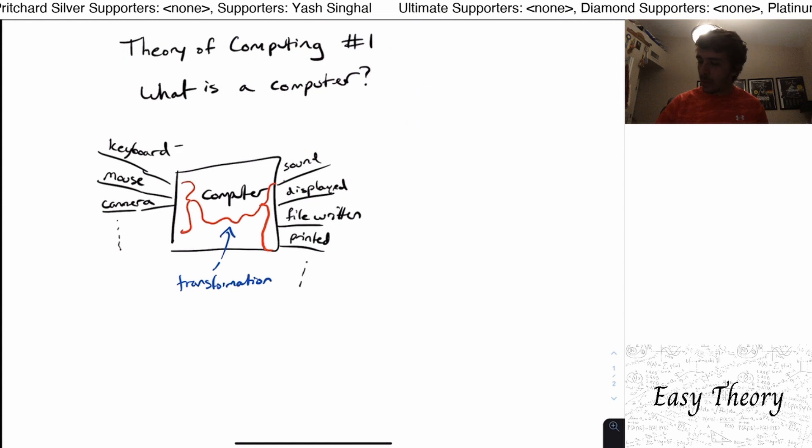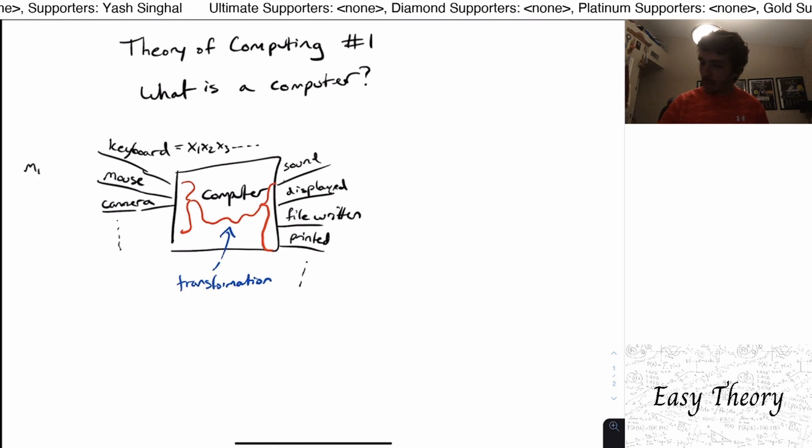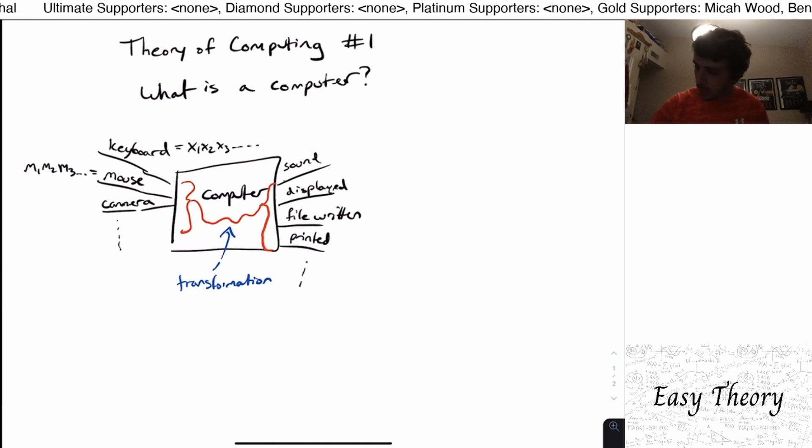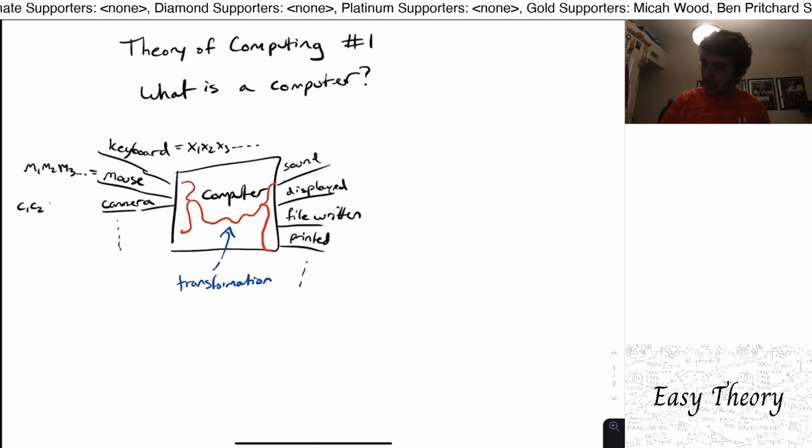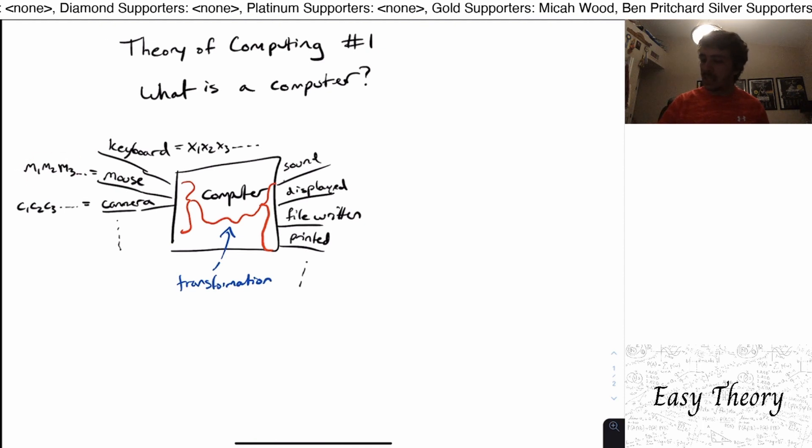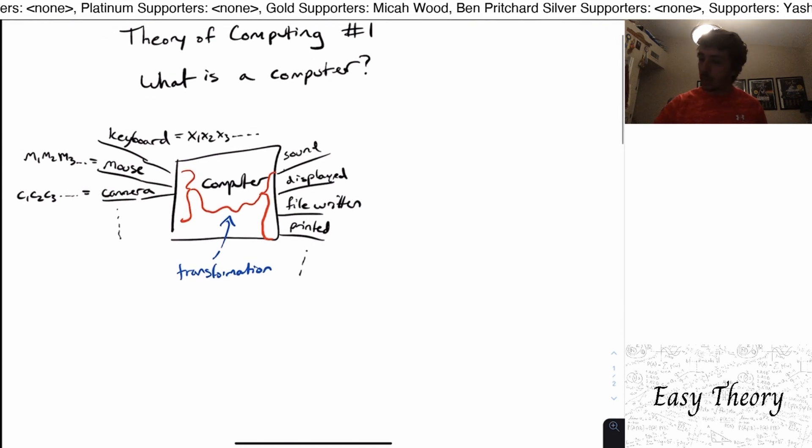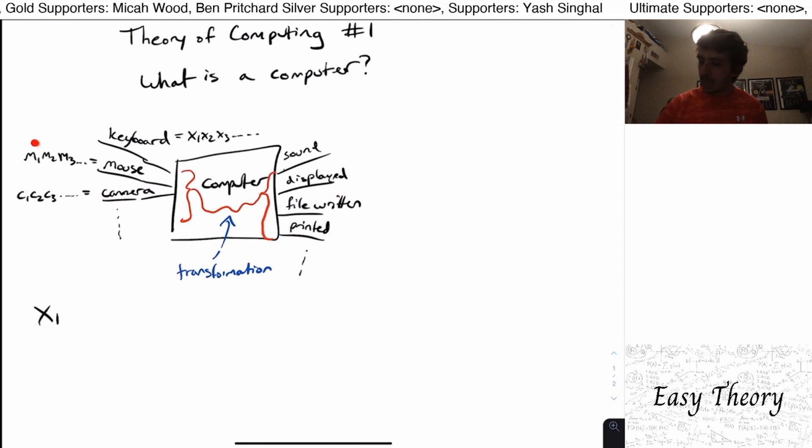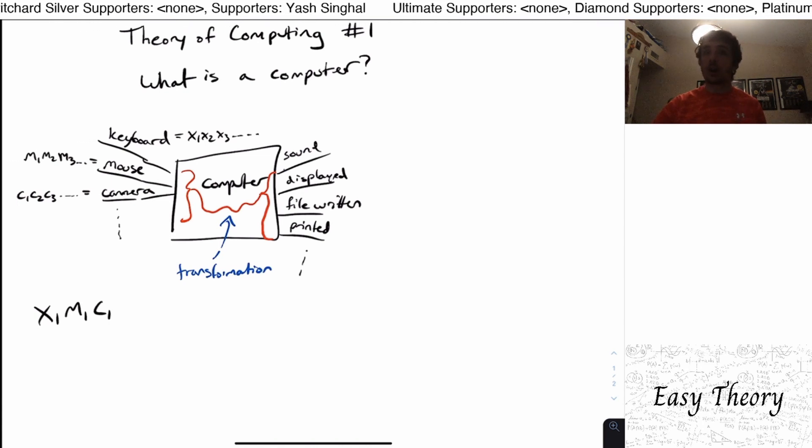Suppose that the keyboard has some bits x1, x2, x3, etc. The mouse has bits m1, m2, m3, etc. And the camera has bits c1, c2, c3. So these are the bits that are being fed from these particular inputs into the computer. Well, what we can do is a process called interlacing, which is we take the first bit of one of them and write it down, select x1. And then we take the first bit of the next component, which is m1. And then the next bit of the next component, which is c1.